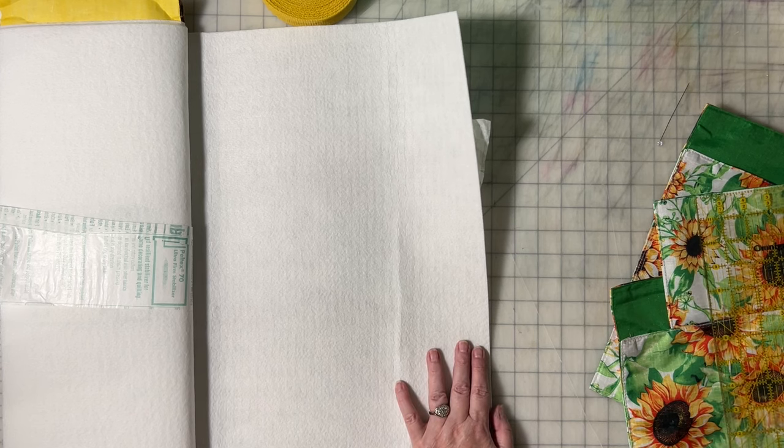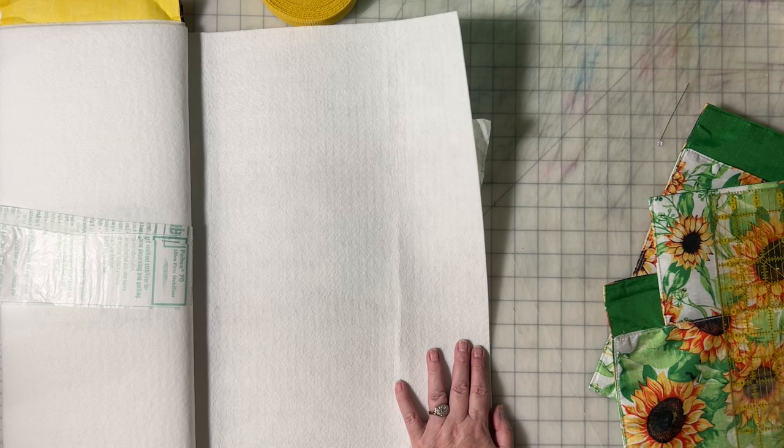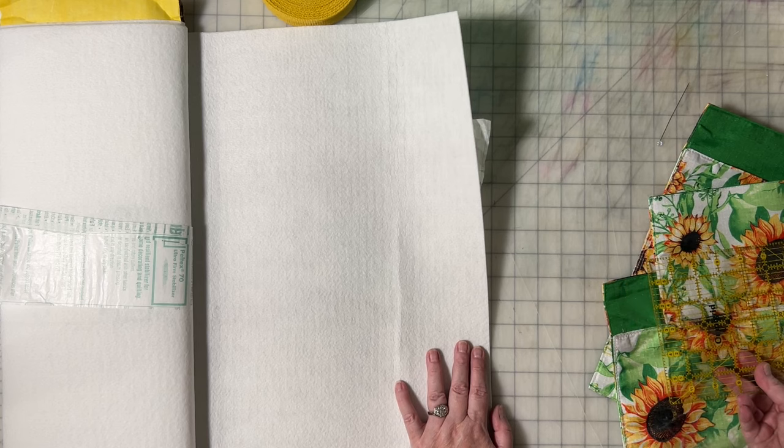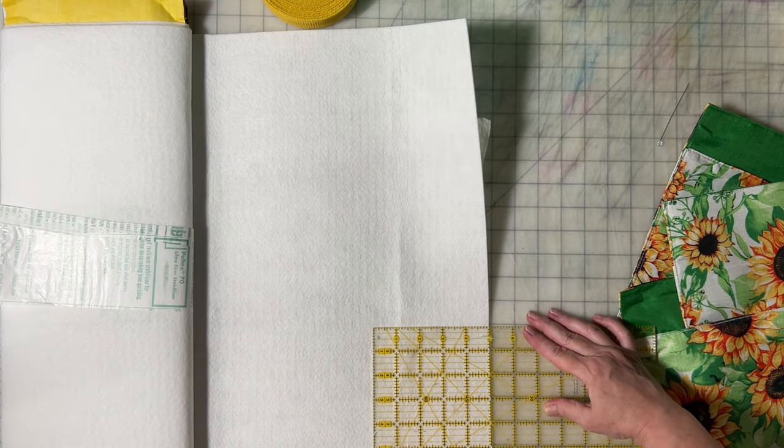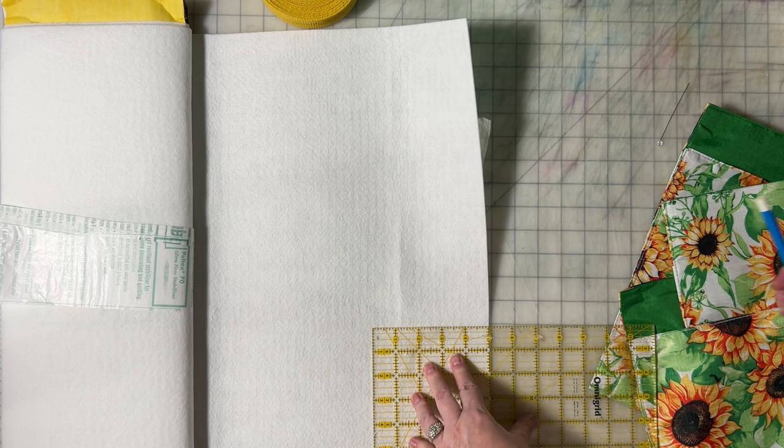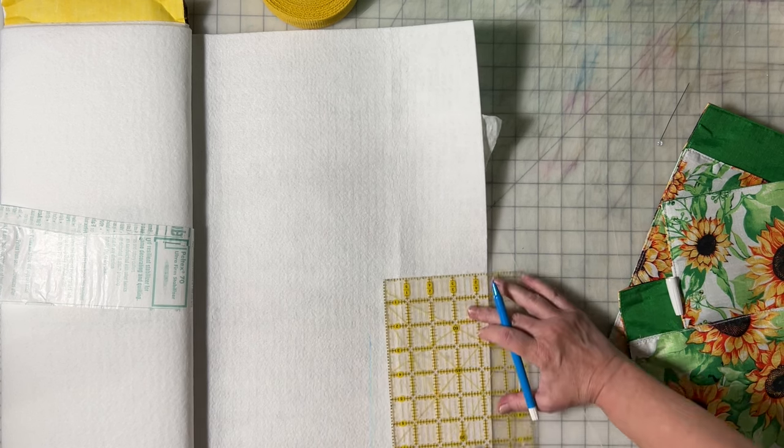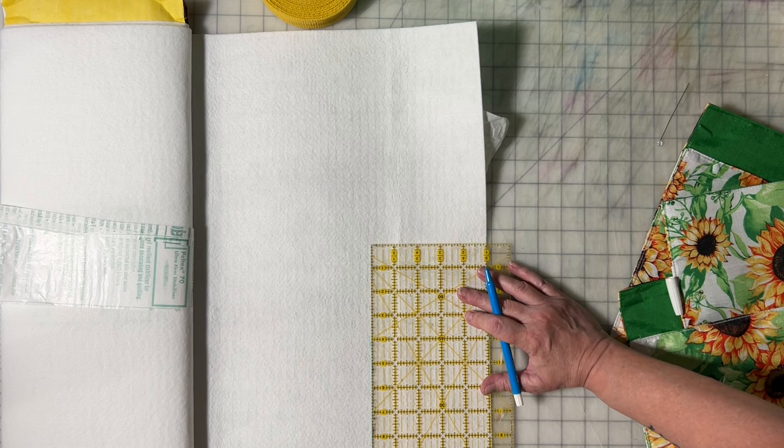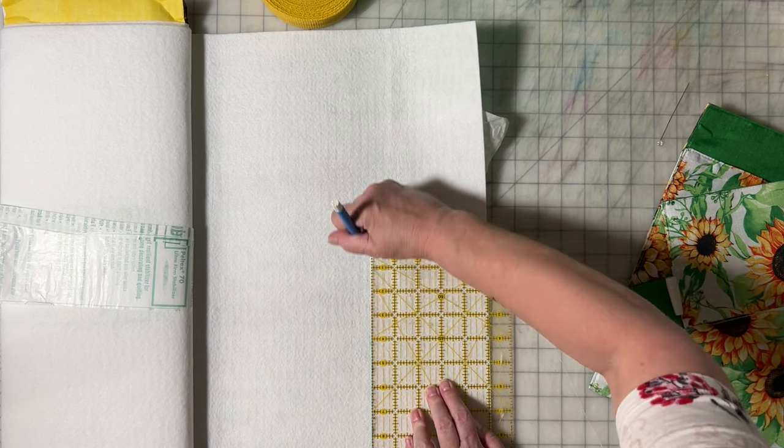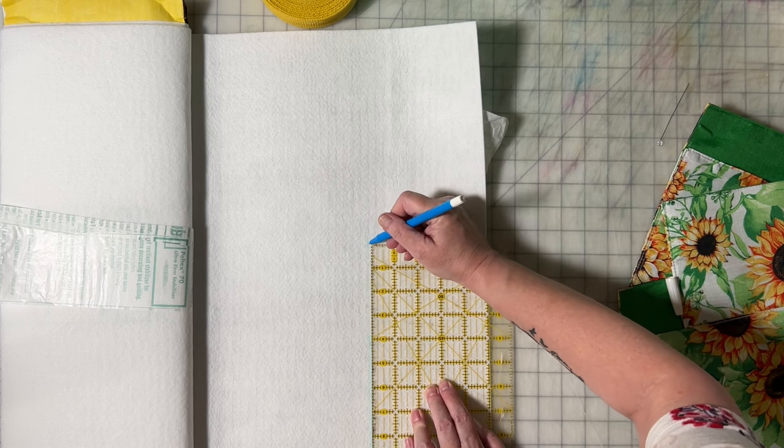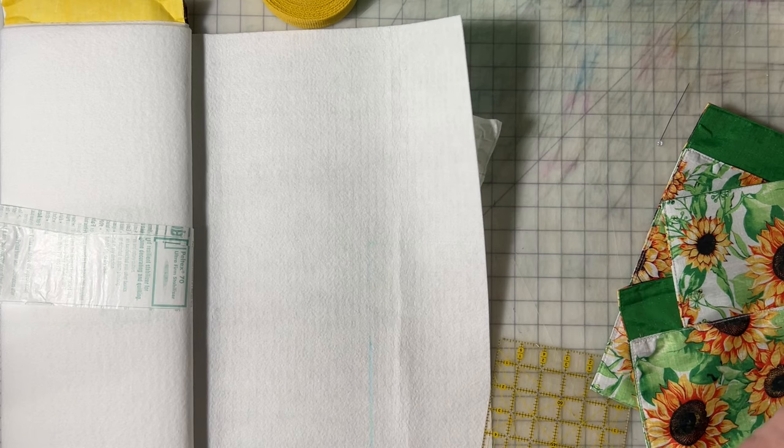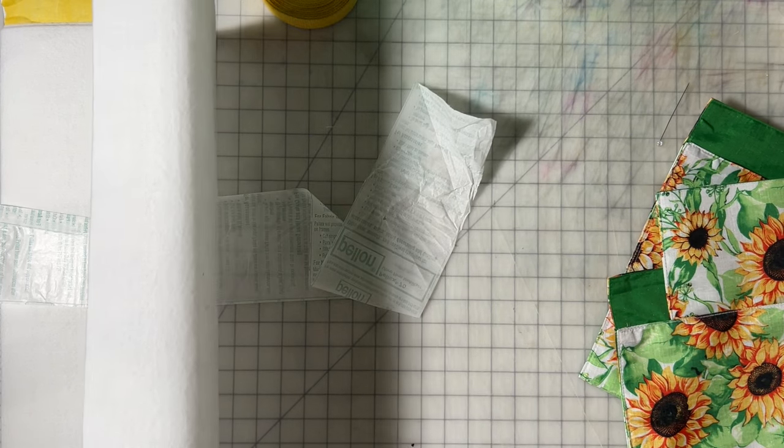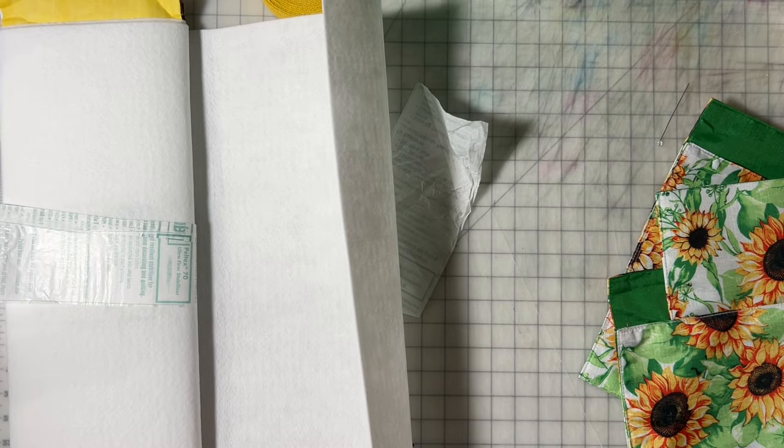I have a ruler here next to me, so this is about... let's try the other end where it has the right numbers. So our piece needs to be about five by eleven. Okay, grab a marker. And you're doing these sewing projects, these gridded rulers and the gridded mat on my table really come in handy.